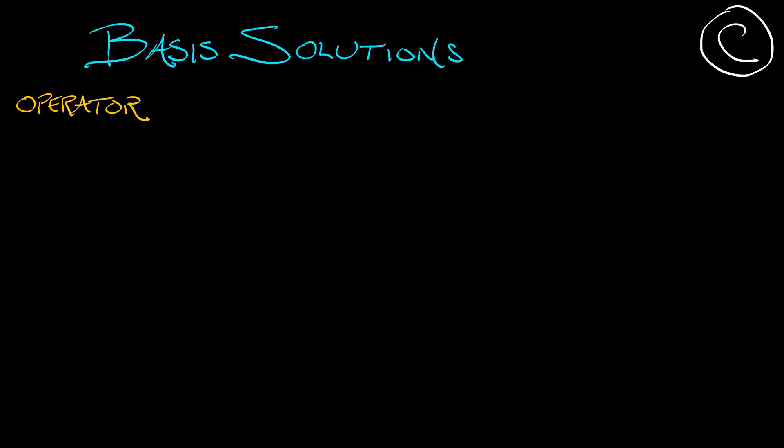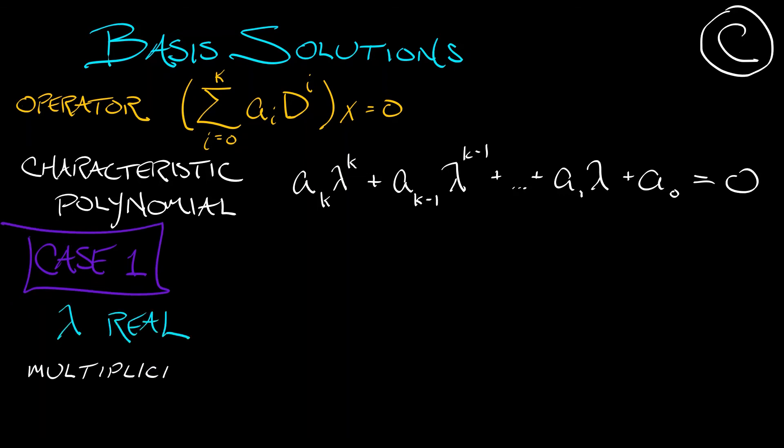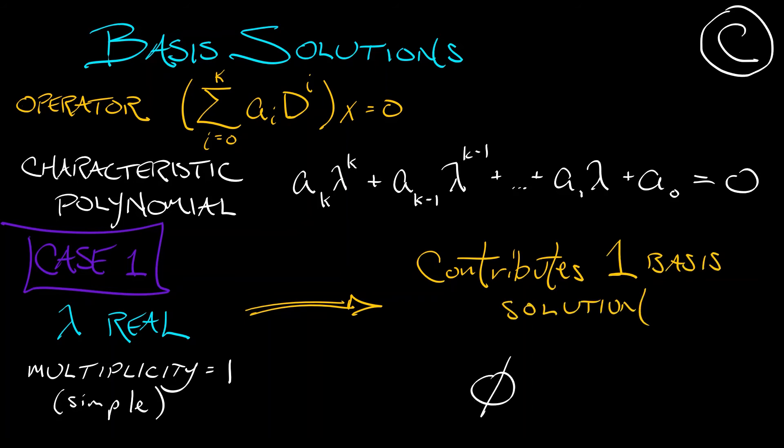Let's start off in continuous time. Let's take our polynomial operator and extract out the characteristic polynomial that is going to be a degree k polynomial in lambda. The nicest possible case is when you have a real root of this characteristic polynomial with multiplicity one. So lambda is just an isolated root. This eigenvalue, this lambda, contributes exactly one basis solution to the final answer. That basis function is e to the lambda t, just like it was in 2D.